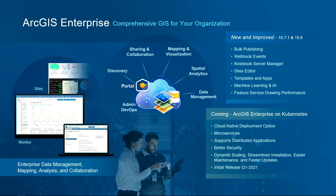ArcGIS Enterprise has made significant advancements in versions 10.7, 10.7.1, and 10.8 — the latest release — including support for utility network services and parcel services, the integration of notebooks, machine learning and AI, and webhooks for application integration. ArcGIS Enterprise on Kubernetes is a significant engineering project in active development, to be released in Q1 of next year. It will offer customers a cloud-native deployment of ArcGIS in their own infrastructure with containerized microservices representing each individual capability, significantly extending what customers can do with ArcGIS Enterprise both in the cloud and within data centers.